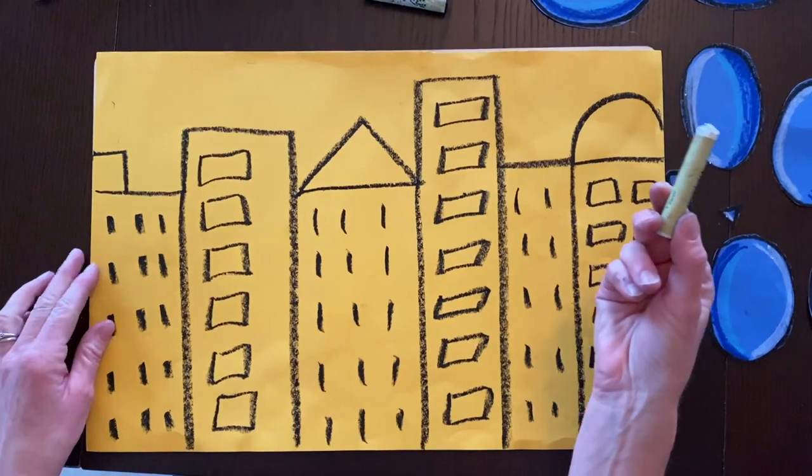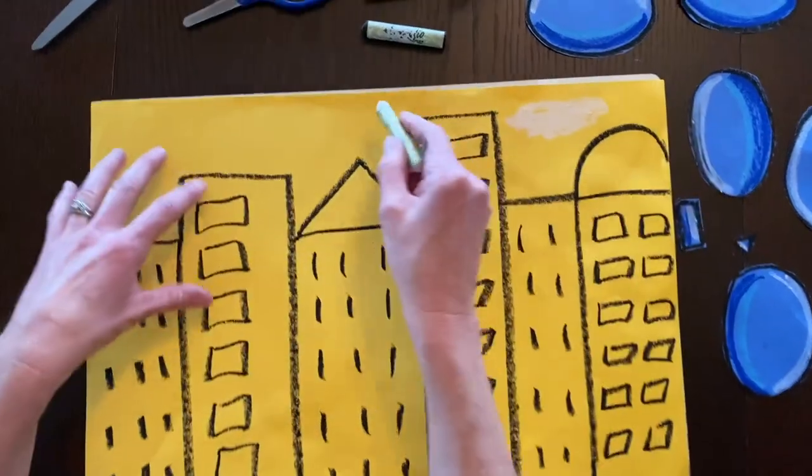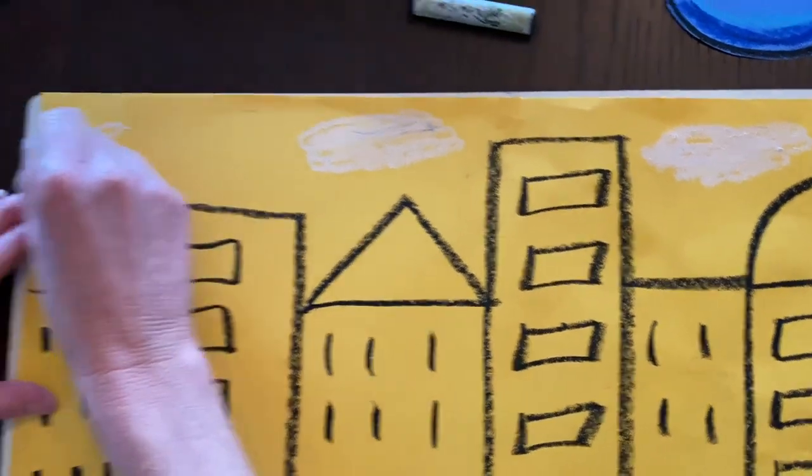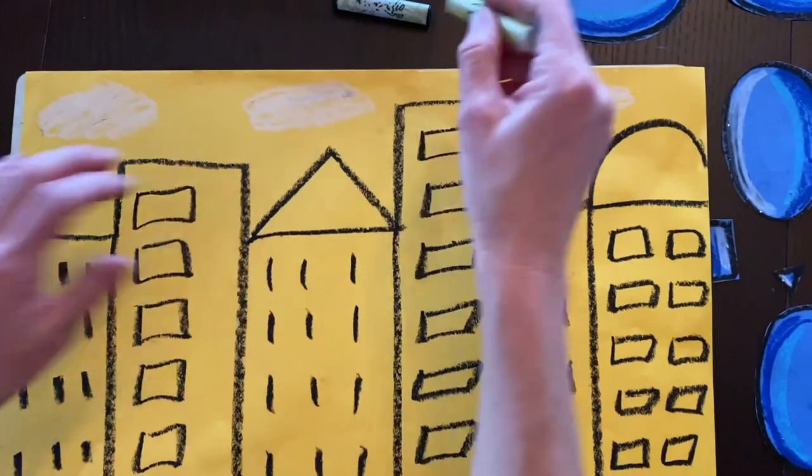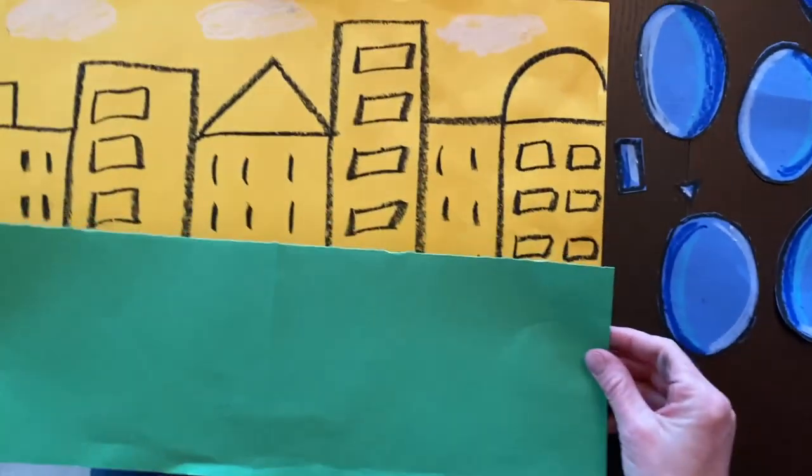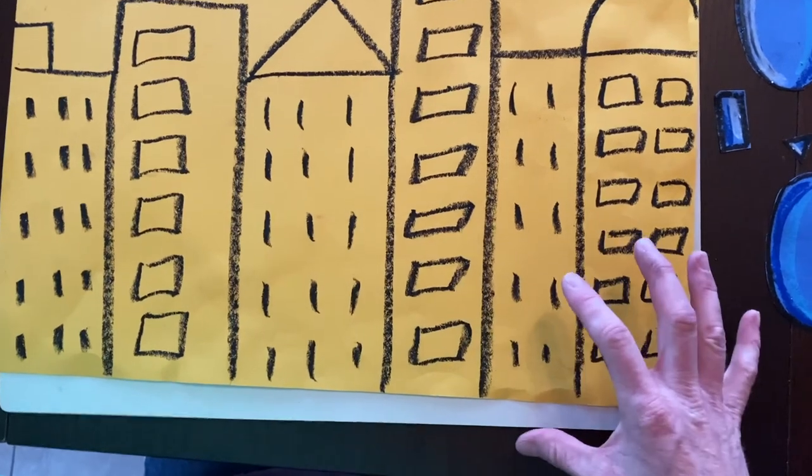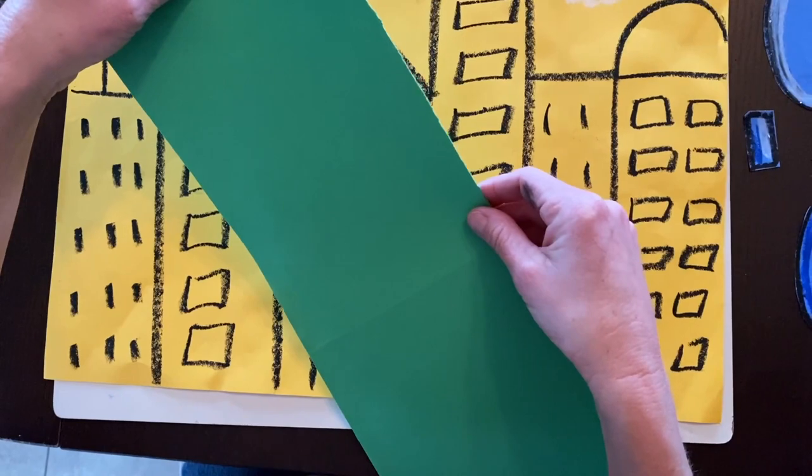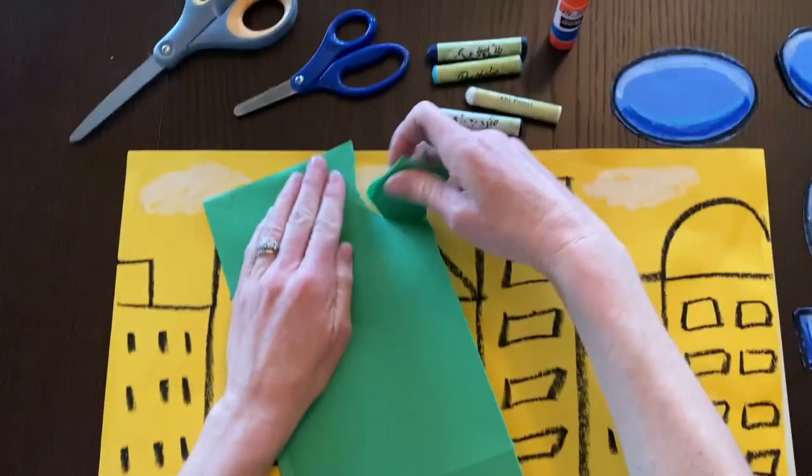And I'm going to add just a few clouds in my sky up here just to make it look a little more interesting. Very, very, very simple. There we go. So now I just added a few clouds up here. And before we add our blue dog in here, the reason I have my green is because what I'm going to do is I'm going to kind of make it so it looks like maybe there's a little bit of grass in here. So what I'm going to do is I'm going to take this paper and I'm going to tear it a little bit to make it look like grass. Very, very, very simple.